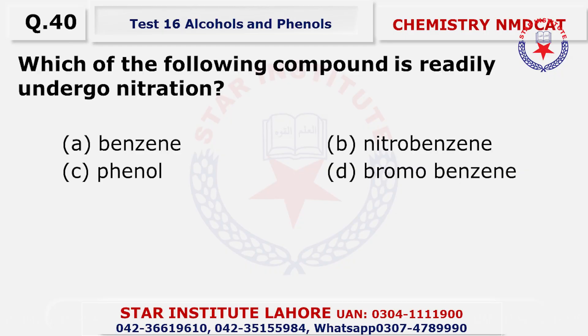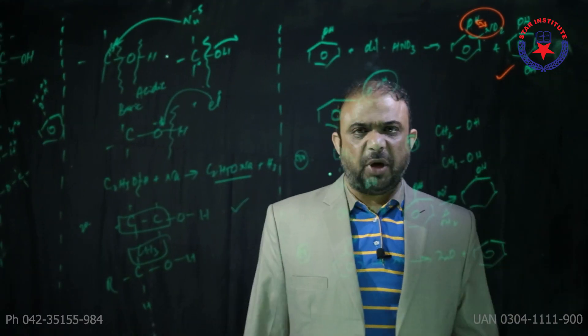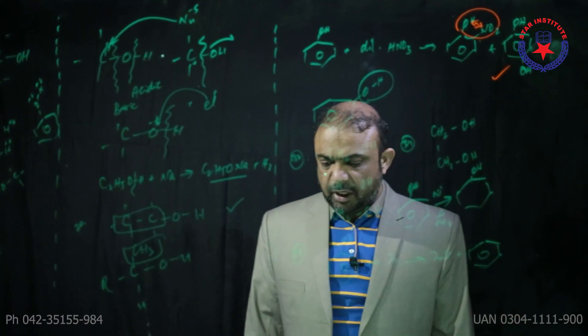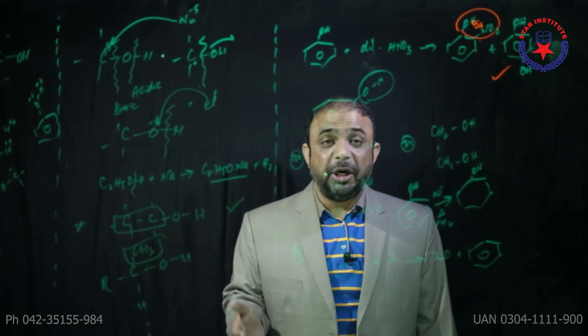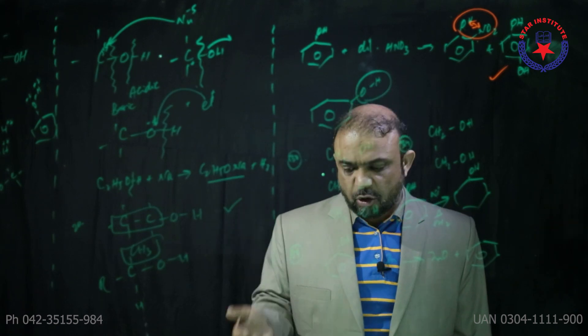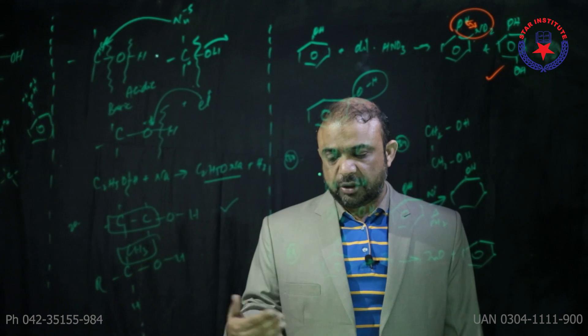And the last one is question forty: which of the following compounds readily undergoes nitration? Where an electron donating group is attached will be suitable. Alpha choice benzene has no electron donating group, beta is nitrobenzene with electron withdrawing group, halogens are not strong electron donating groups, and the strongest one is phenol - that's why the choice is C, phenol.